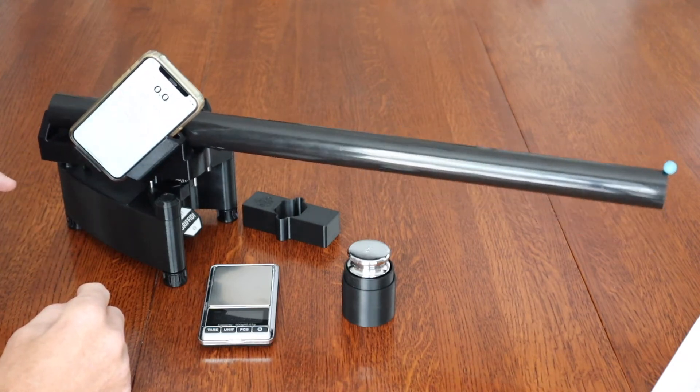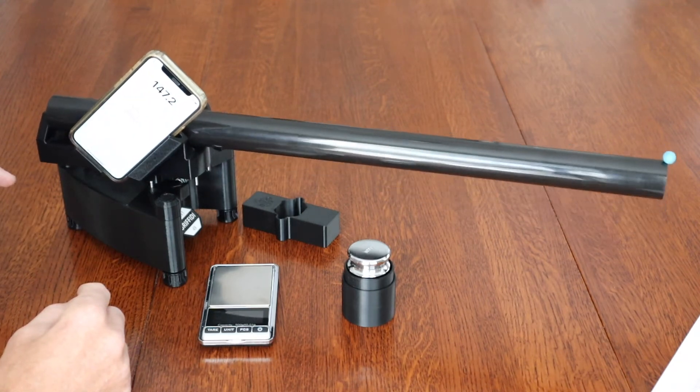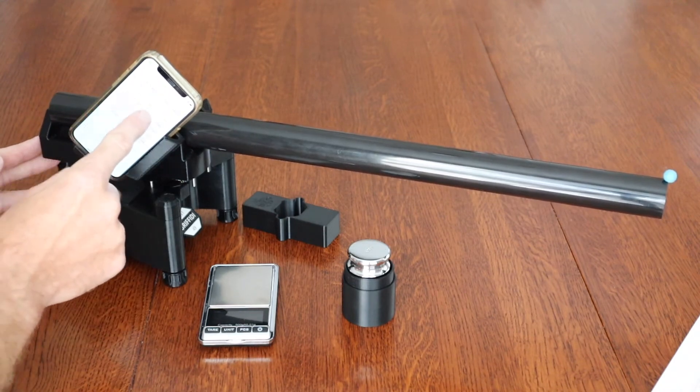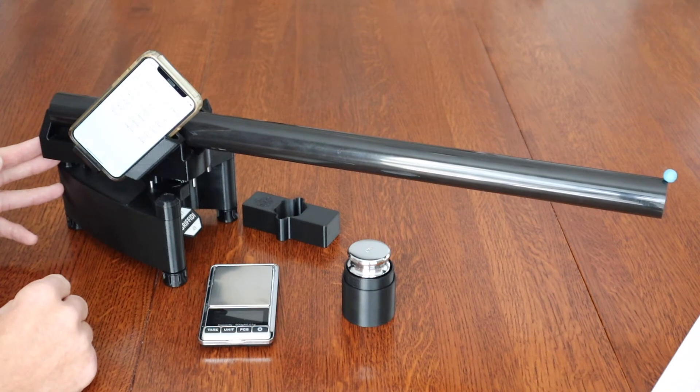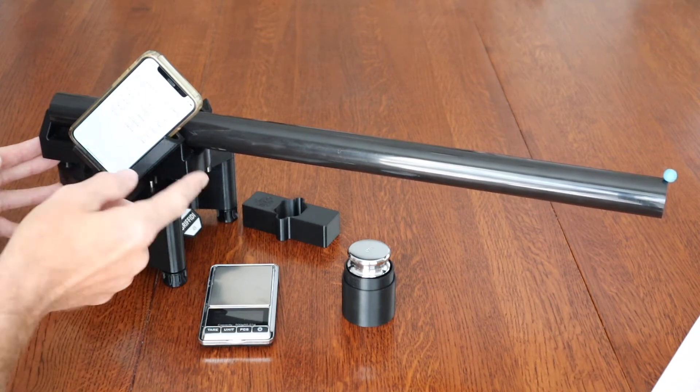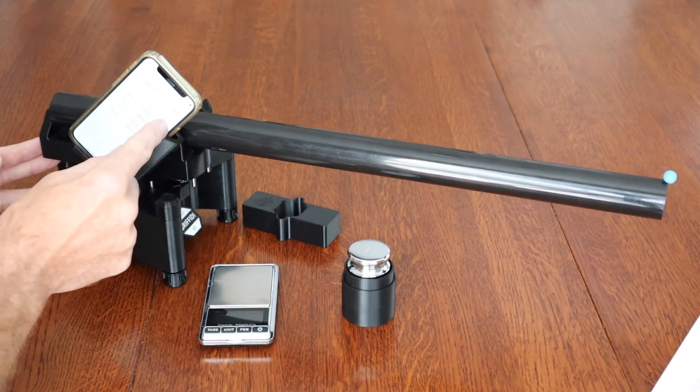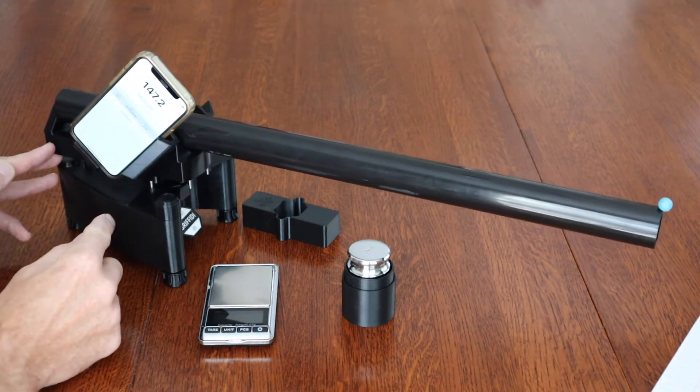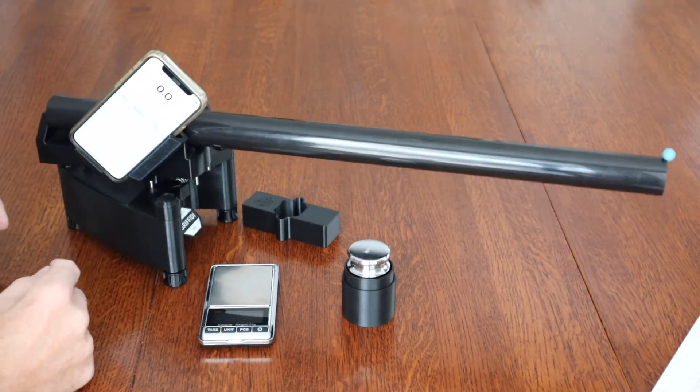I kind of hit that cradle with my finger there so that may have affected that reading. So you can see it put that one in red and said that was a potential outlier. I know that hit my finger so I'm going to delete it and then add another measurement.